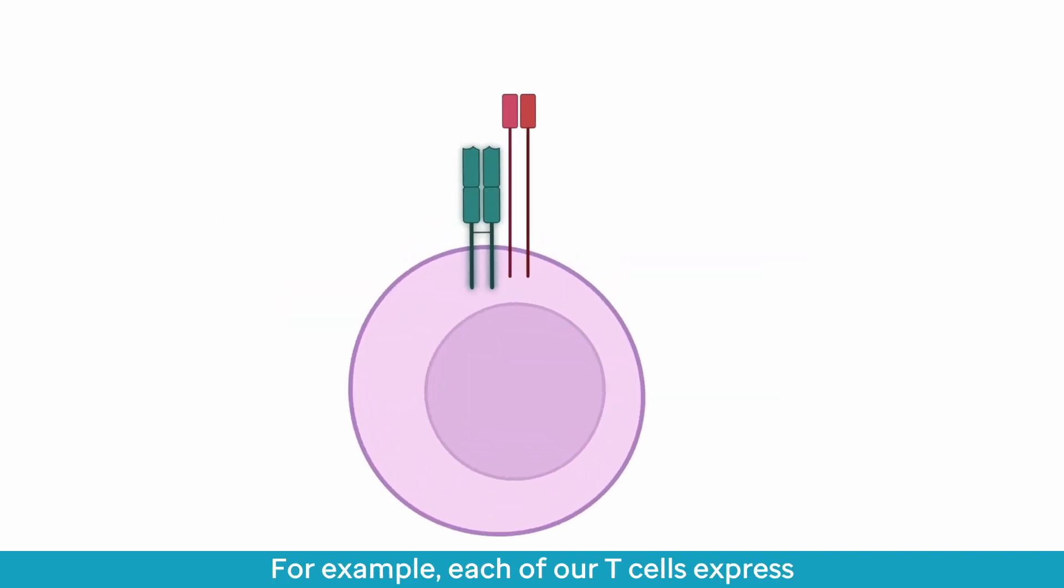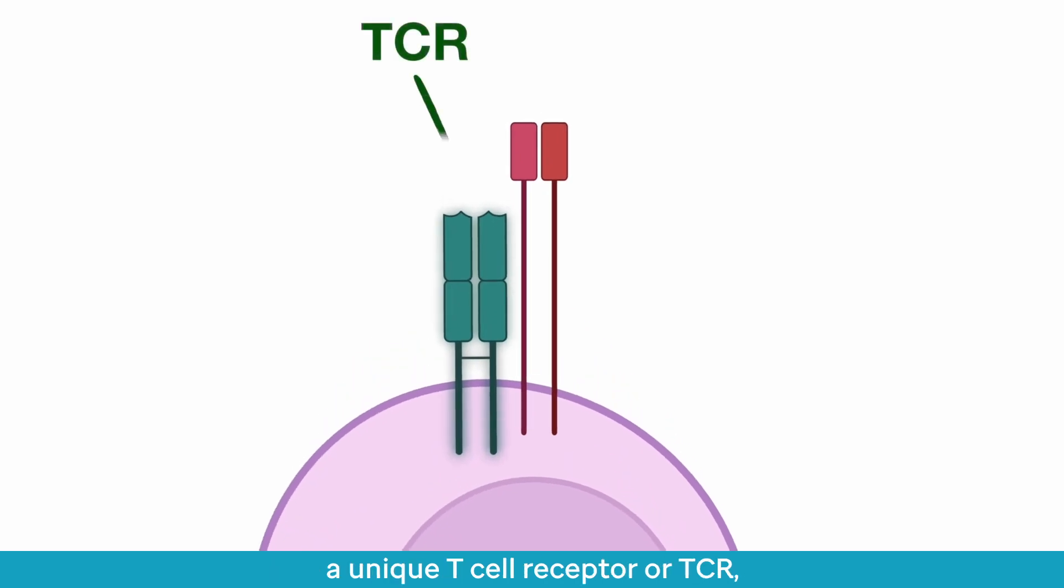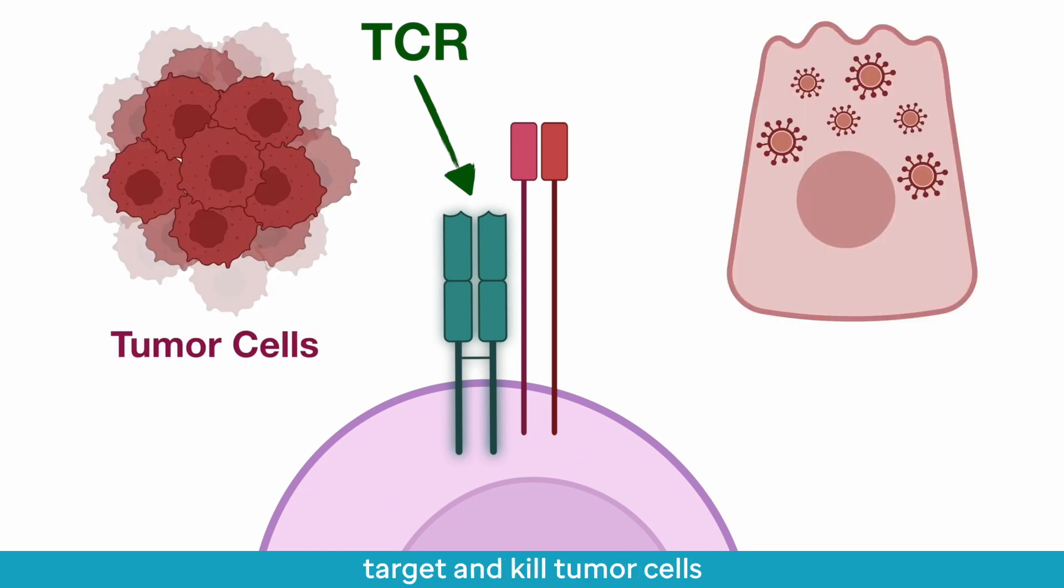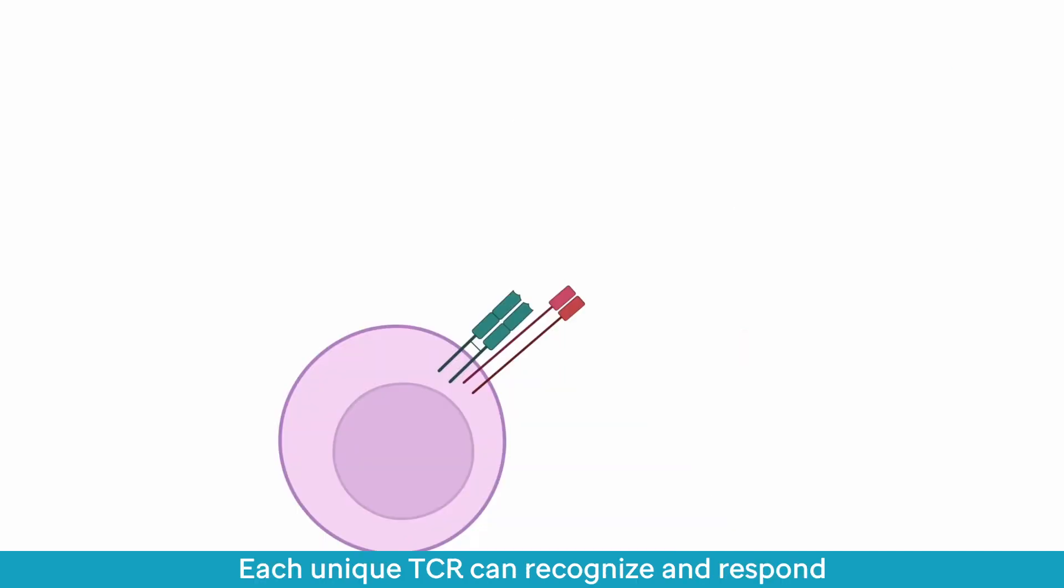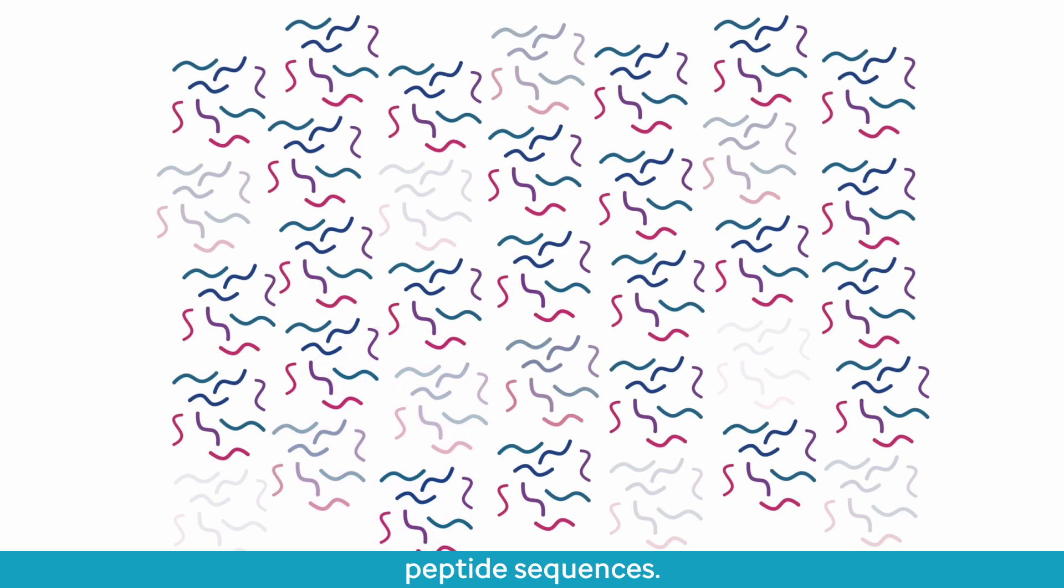For example, each of our T cells express a unique T cell receptor, or TCR, which is what gives CD8 T cells the ability to specifically target and kill tumor cells or infected cells. Each unique TCR can recognize and respond to only a small number of theoretically trillions of short peptide sequences.